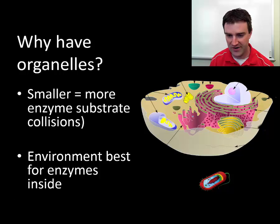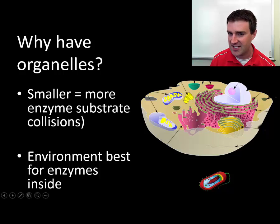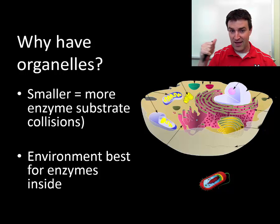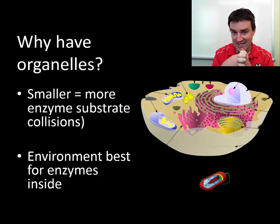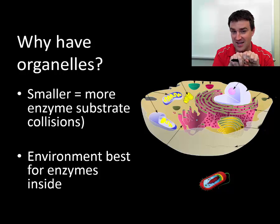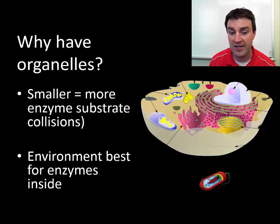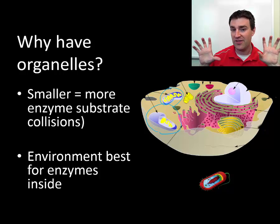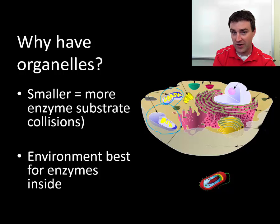Prokaryotic cells are much smaller than eukaryotic cells. Having a larger size can be a potential disadvantage because enzyme proteins randomly move around the cell, and the chemical substrates they interact with also randomly move around. They have to collide together for a chemical reaction to be sped up. If you have a very large cell, the odds that enzymes and substrates randomly collide would actually be a much lower probability. So why do larger eukaryotic cells have these special compartments?